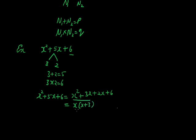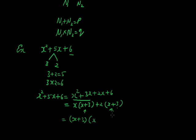From those two terms taking x common: x squared divided by x gives x, and 3x divided by x gives 3. From the next two terms, we take 2 common: 2x divided by 2 gives x, and 6 divided by 2 gives 3. Now we see that x plus 3 is common in both terms, so we take x plus 3 common. What is left is x and plus 2. So the factorization of x squared plus 5x plus 6 equals x plus 3 into x plus 2.